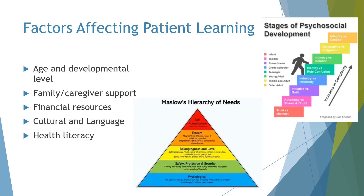There are many factors that affect teaching and learning. The first is age and developmental level — think back to Erikson's stages of psychosocial development. Each stage has its own qualities we need to be mindful of when teaching. Older people have more health issues and sensory issues that can affect how they learn. We also need to be mindful of Maslow's hierarchy: people cannot learn if they are not safe, fed, and cared for. Finances and support systems are also factors.